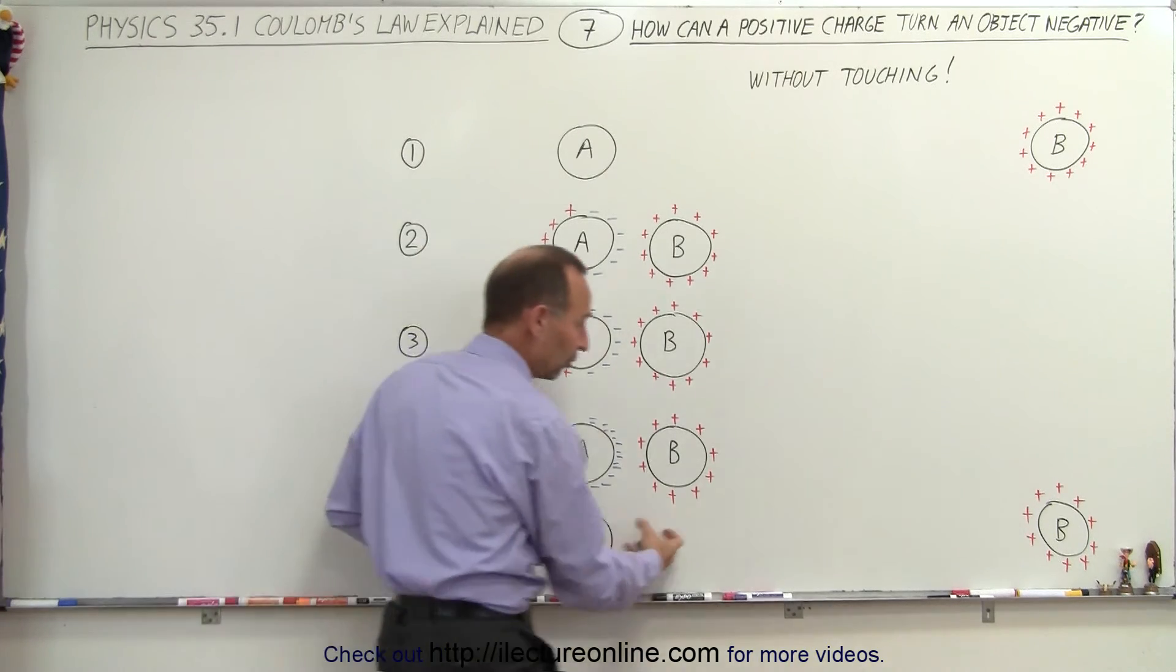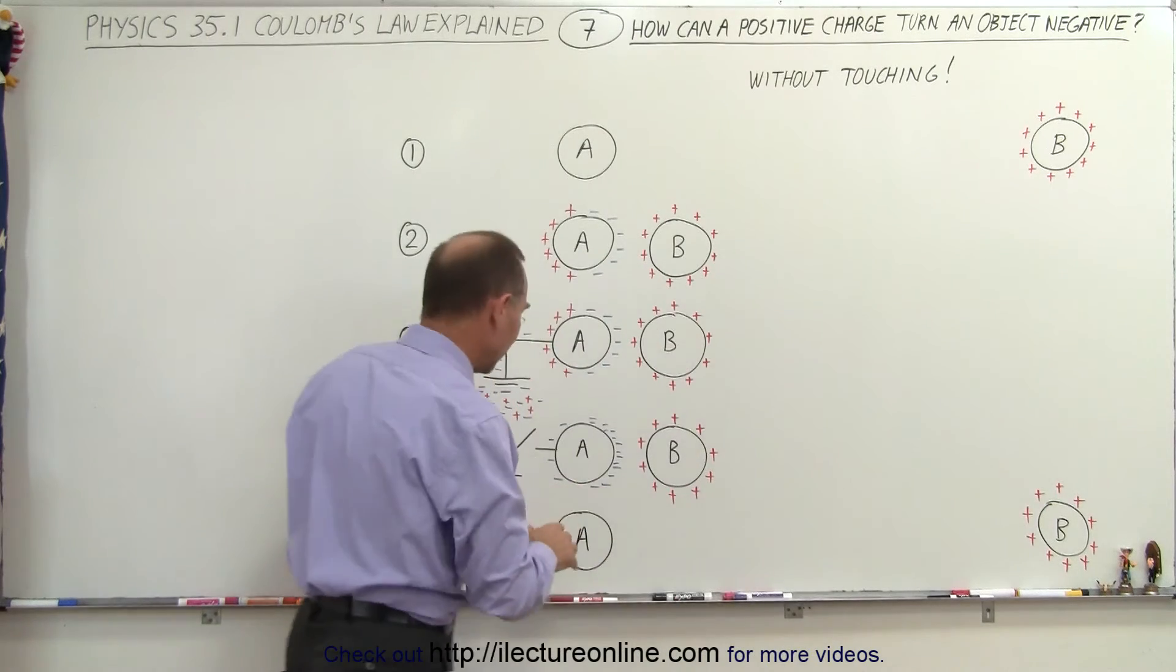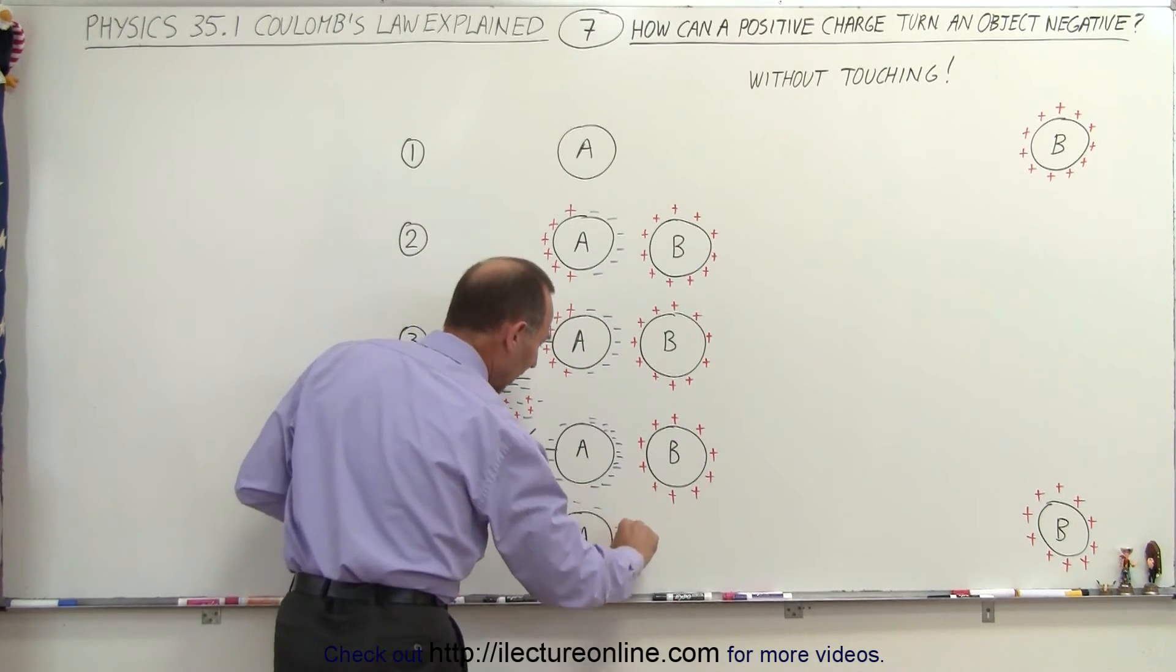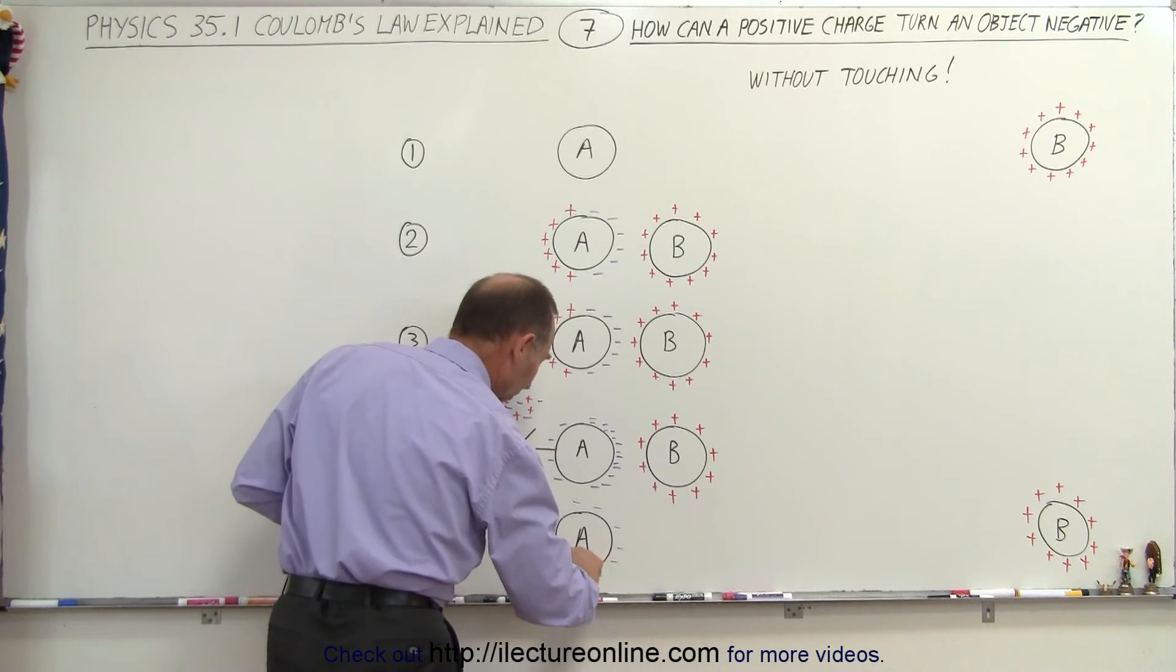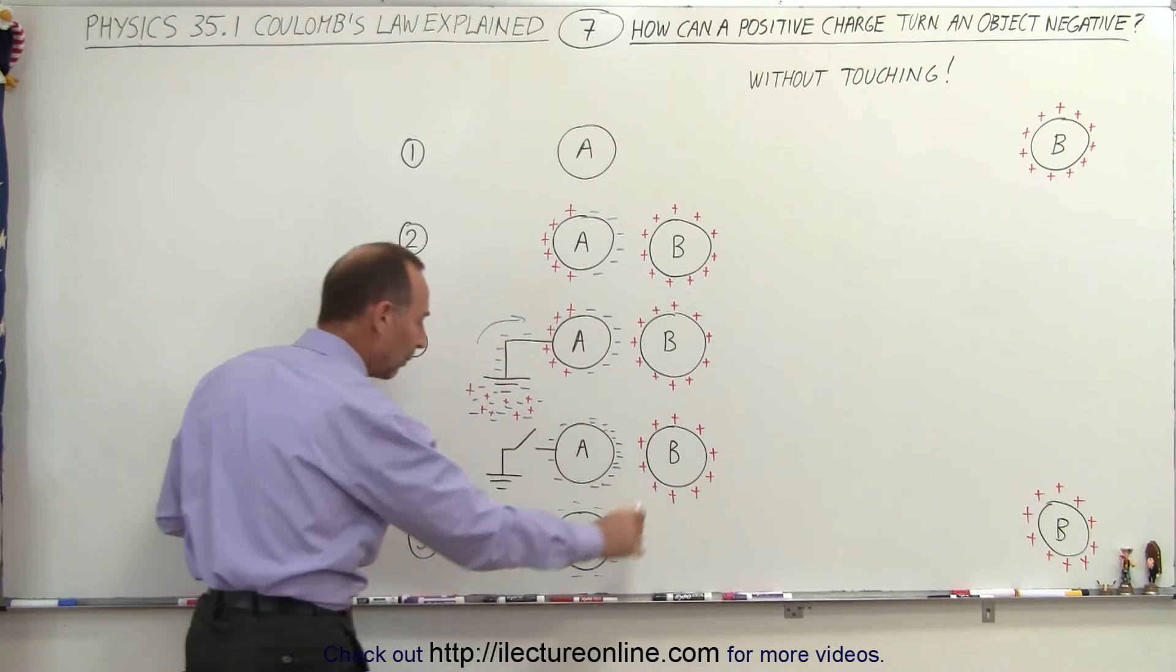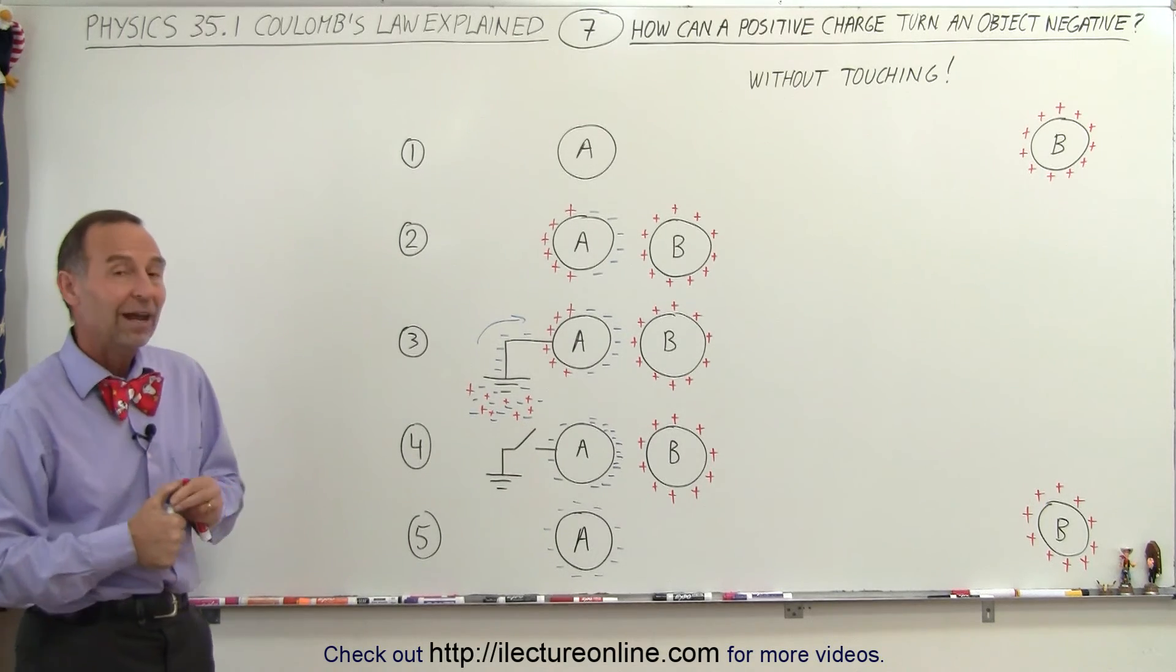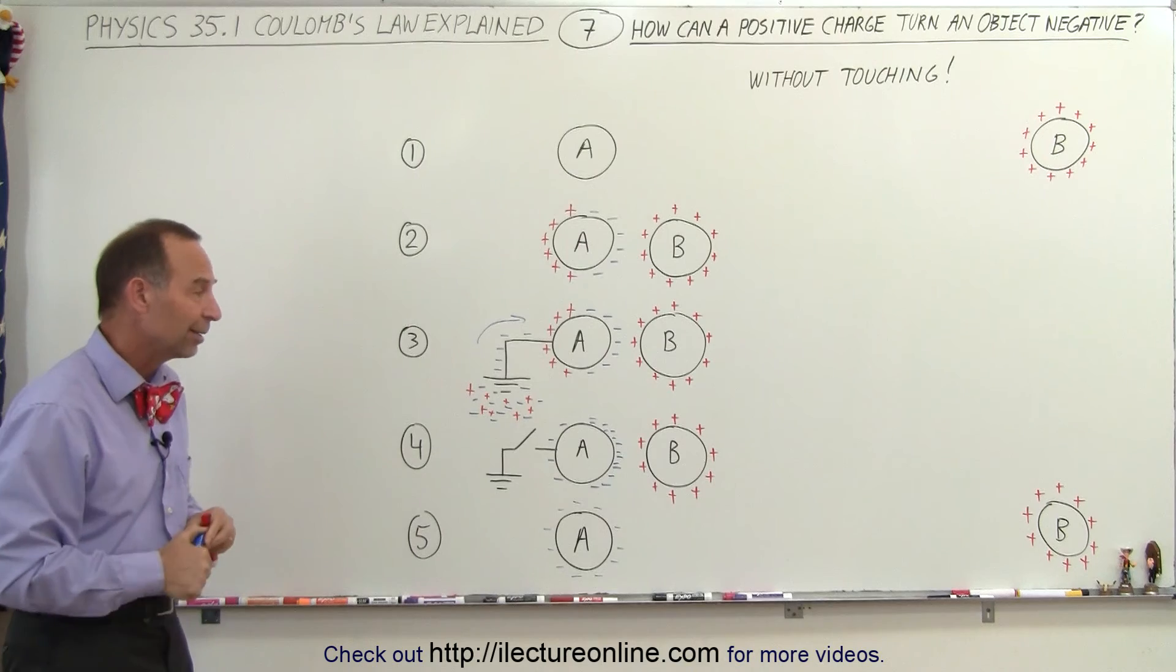Then, when you take sphere B and move it far away again, then these negative charges will then evenly distribute themselves around A because they repel each other, and now we have a nicely charged sphere A, negatively charged sphere A without ever having touched B and A together.